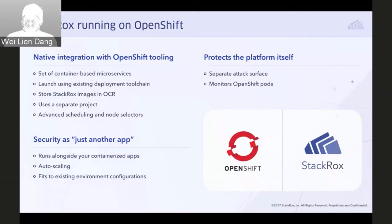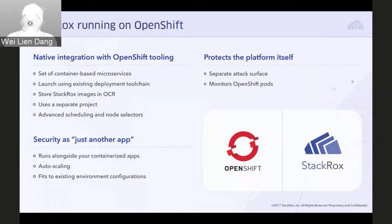The StackRox services used to identify threat indicators — including data analysis and machine learning services — can run on nodes separate from where your containerized applications are running. In this operational model, security can be treated as just another application within your cluster. It runs alongside your containerized applications, managed and operationalized the same way in terms of deployments and upgrades. StackRox also auto-scales up and down based on the data it analyzes.